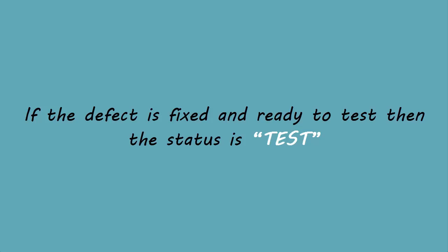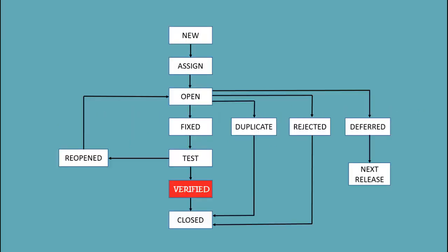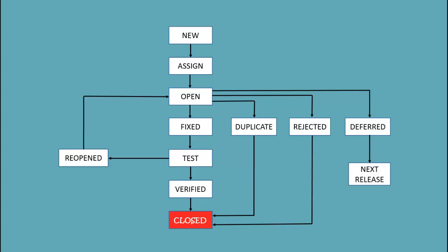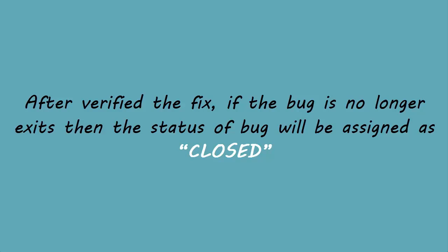If the status is 'test', it means the defect is fixed and ready to test whether it is fixed or not. Verified: the tester retests the bug after it got fixed by the developer. If there is no bug detected in the software, then the bug is fixed and the status assigned is 'verified'. Closed: after verifying the fix, if the bug no longer exists, then the status of the bug will be assigned as 'closed'.